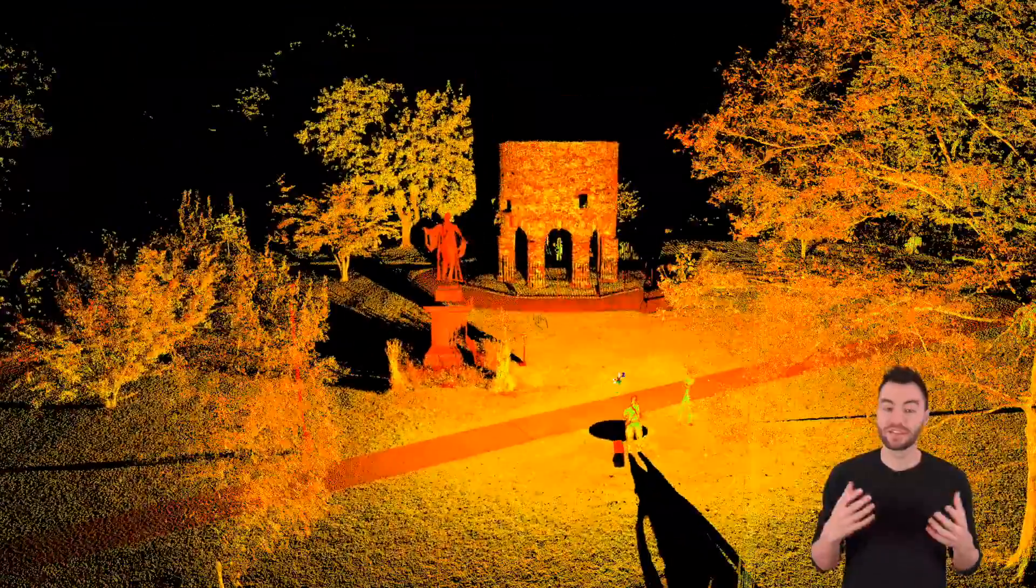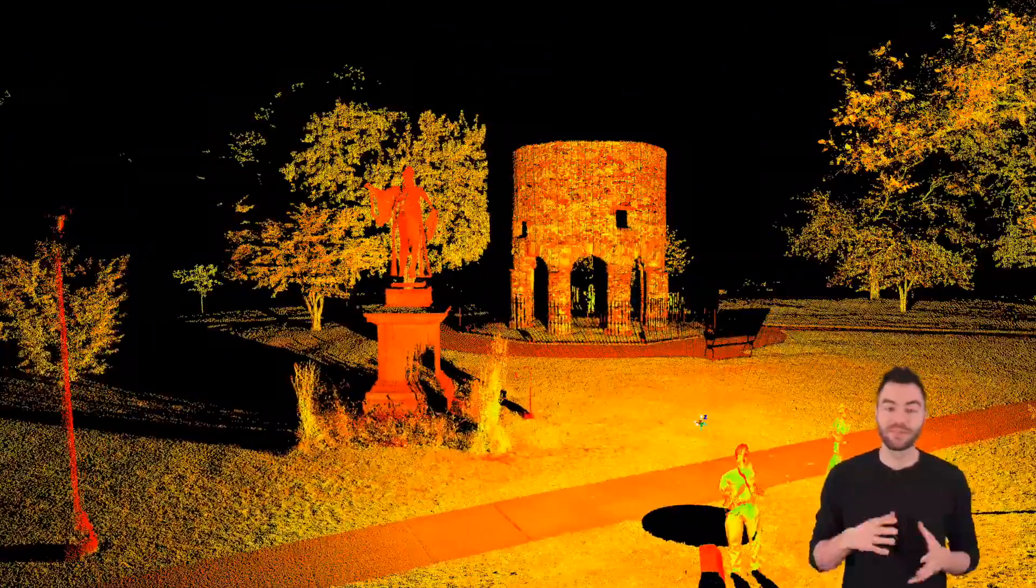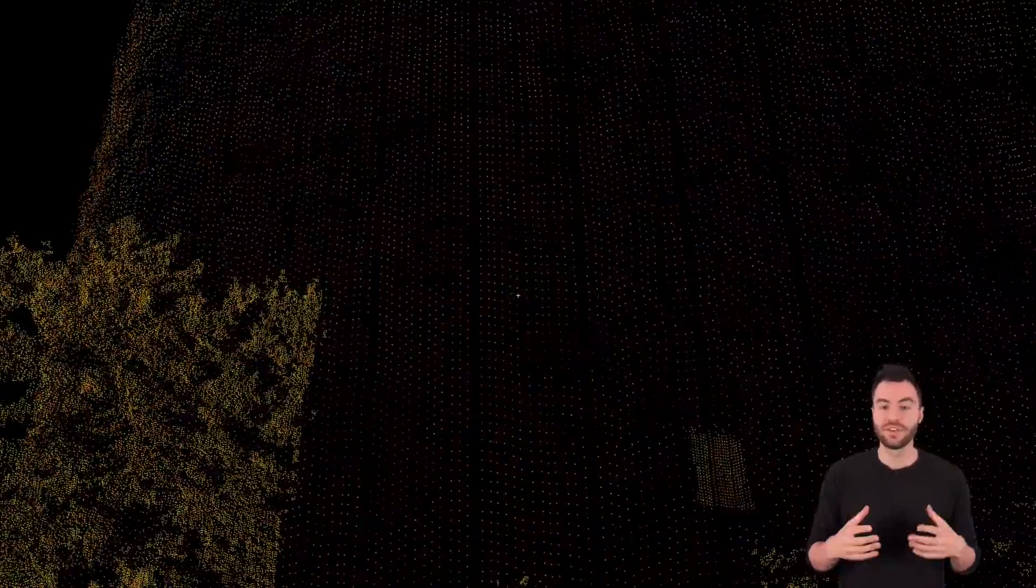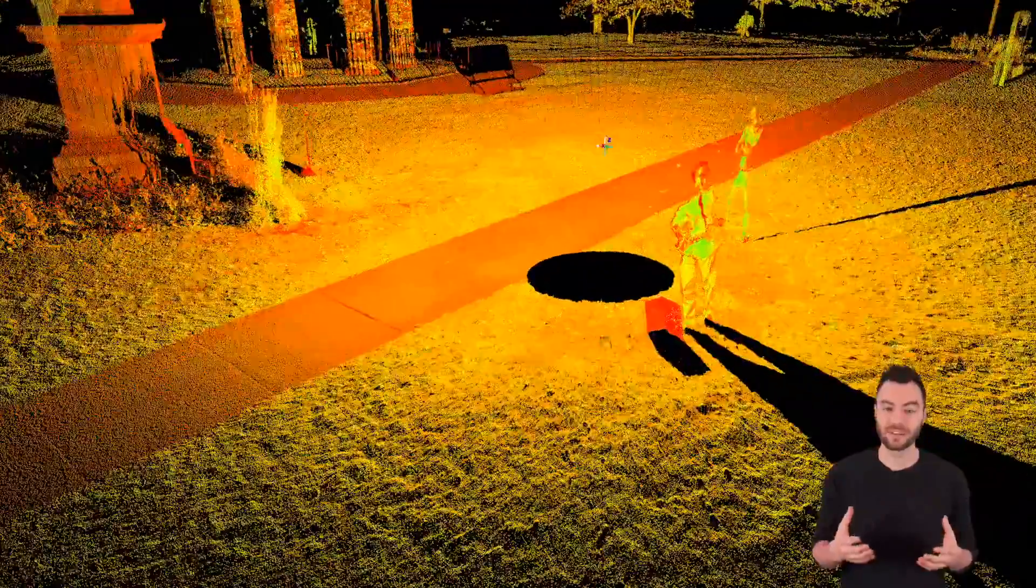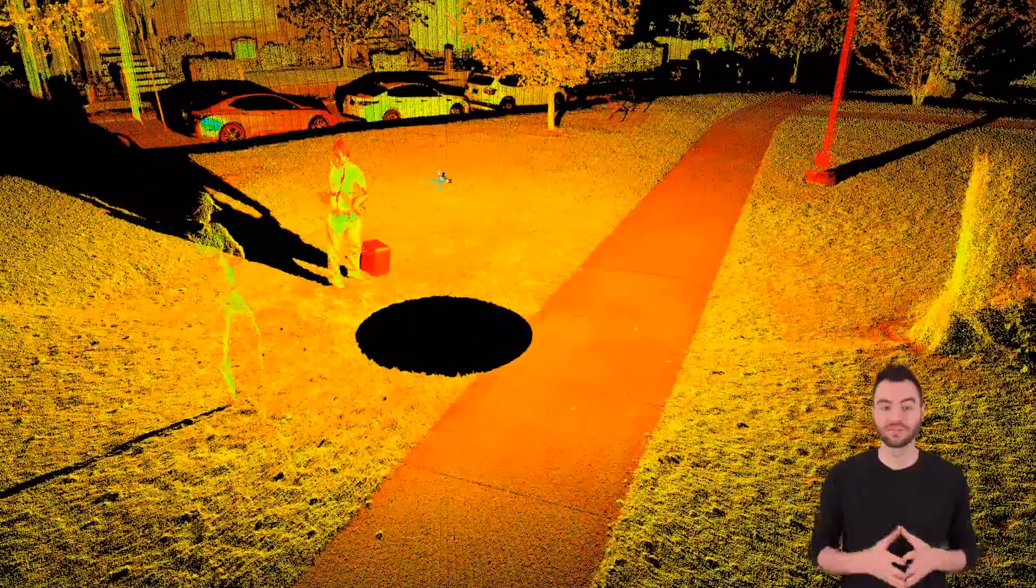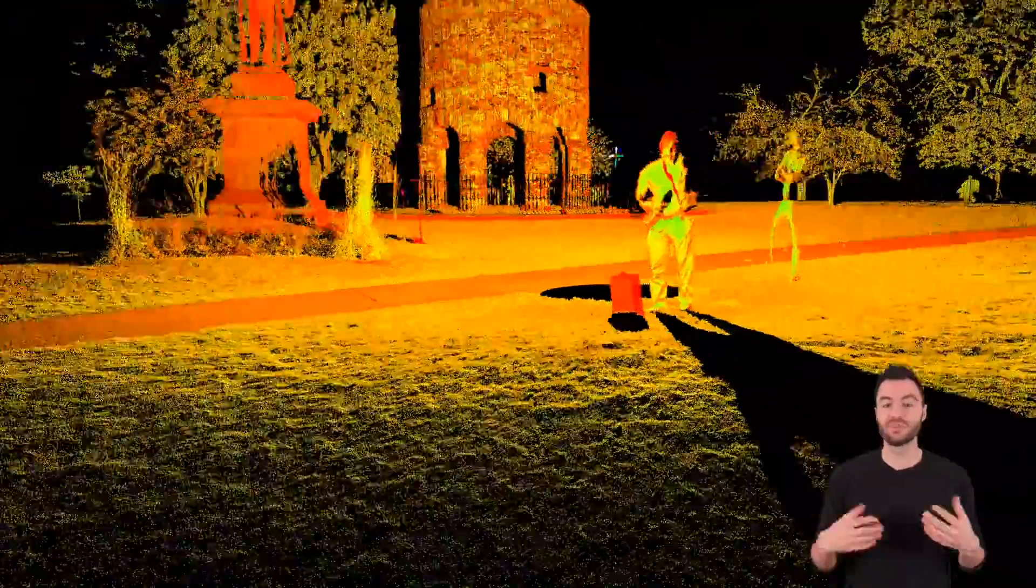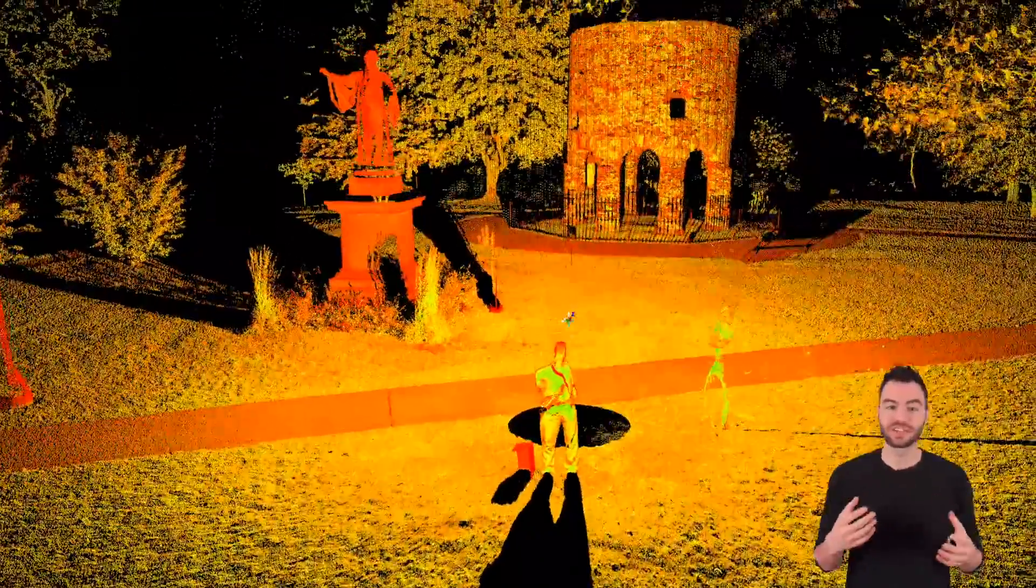Right off the bat you might think this looks like a really detailed model but if we actually zoom in you can see these are all individual points. The scanner takes measurements in every direction to capture your site which creates this cloud of points which we call a point cloud. What you're seeing here is actually the raw point cloud which is colorized by the intensity of the light that was returned to the scanner.